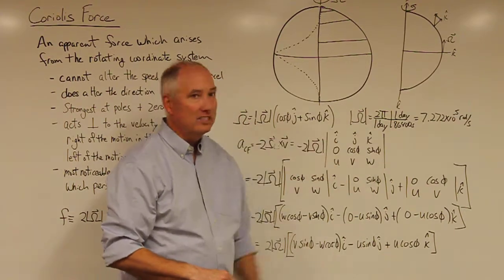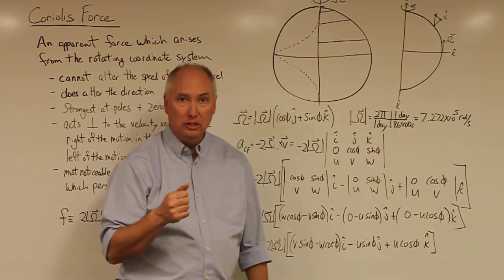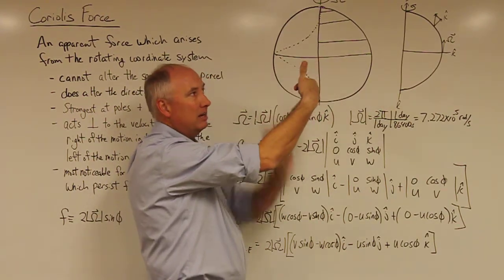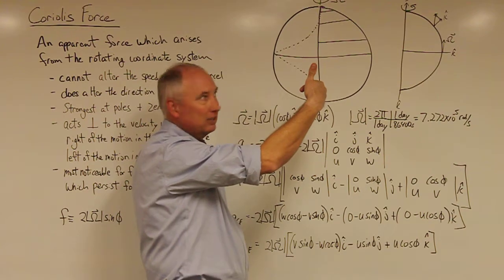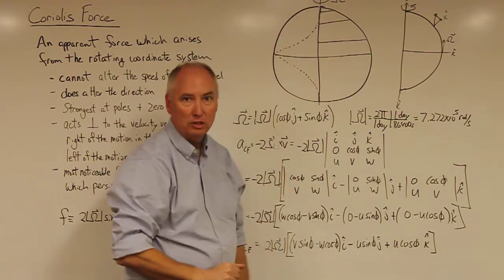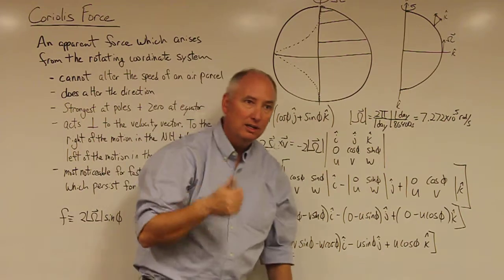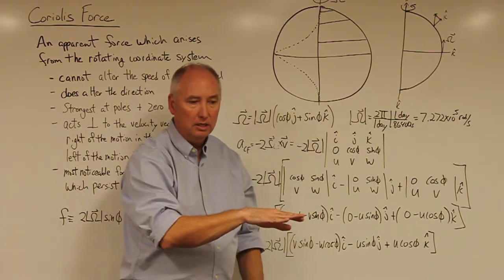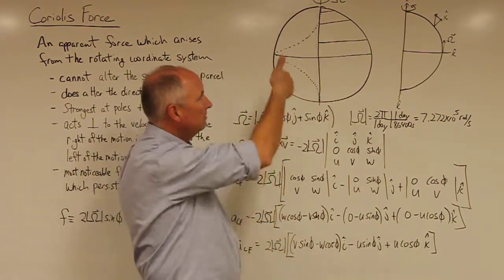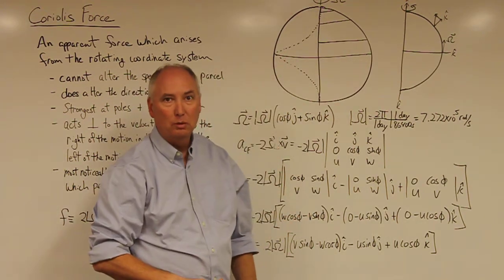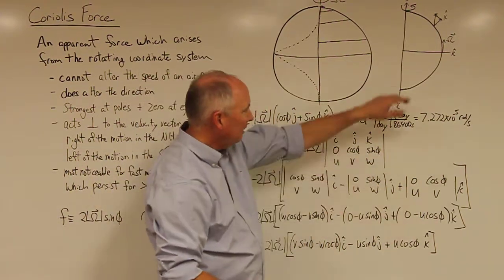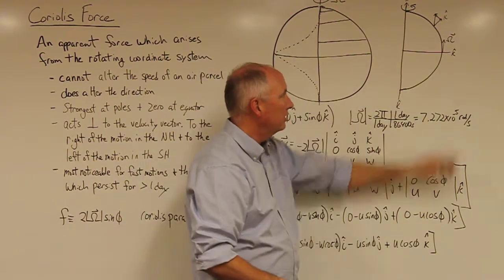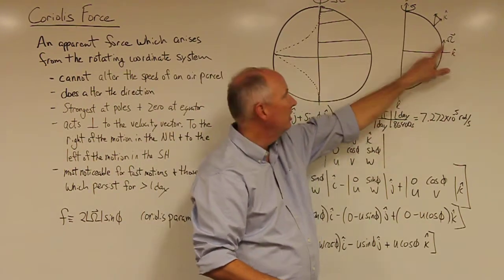But the angular velocity also has a vector direction. And using the right-hand rule, the earth is spinning, that gives me an angular rotation vector pointing in this direction, which is pointed in the same direction as the north pole, if you want to think of it that way. So the angular velocity at the equator is actually pointed in the j-hat direction. At the pole, it's pointed in the k-hat direction.